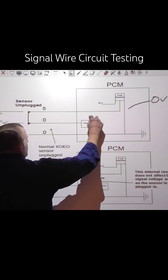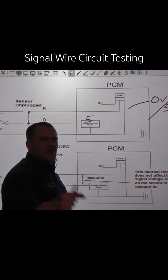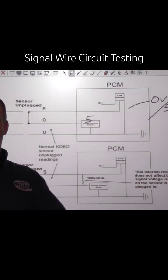What's that going to do? That's going to feed five volts into the voltage sensing circuit and the scan tool should go to five volts. If that happens, how is my signal wire integrity?